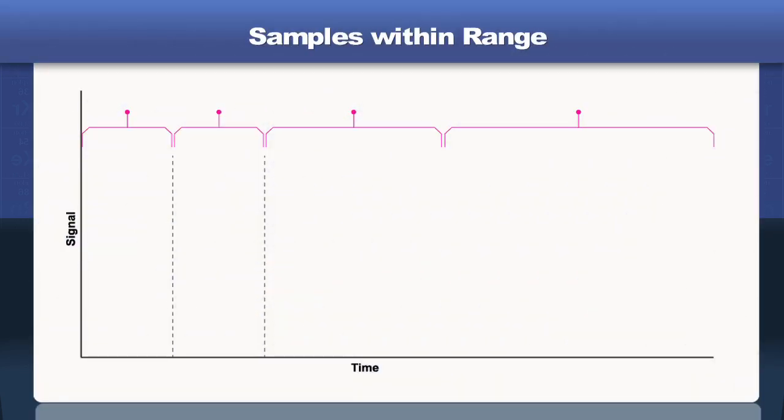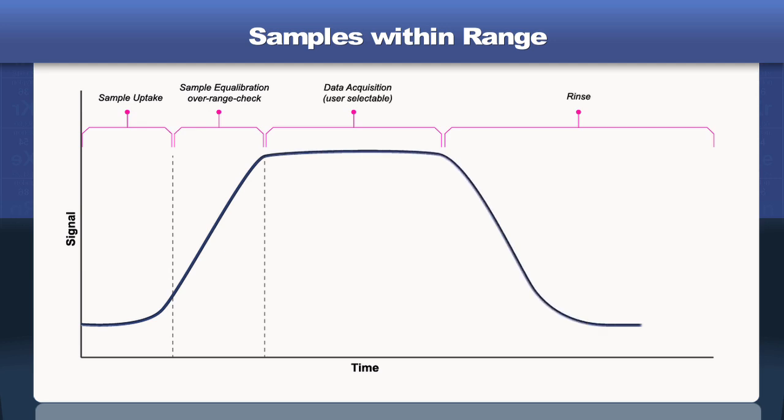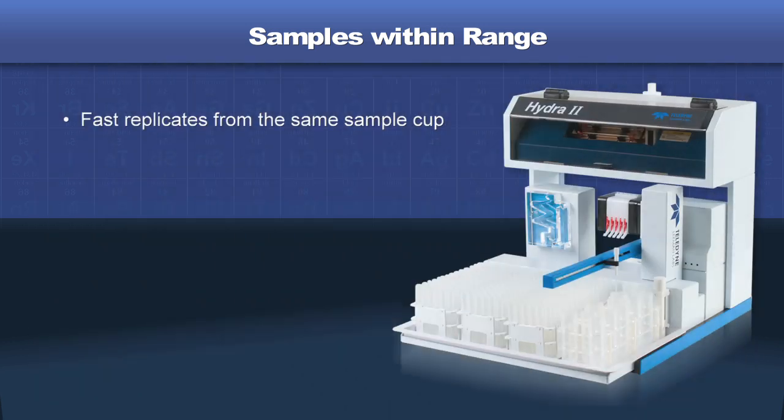The analysis cycle for a typical sample involves a short period of sample uptake, sample equilibration, data acquisition, and rinse. Unlike conventional systems that consume all of the material in the same cup, the Hydra 2 AA is able to quickly conduct multiple replicate analyses from the same sample cup. This approach ensures high measurement quality and allows the operator to reanalyze the sample if needed.